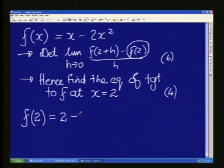So I get 2 minus 2 times 2 squared. Now 2 squared is 4 times 2 is 8. If I take 2 and I take 8 away, I get an answer of minus 6.